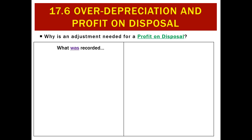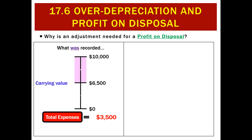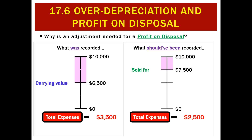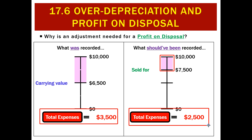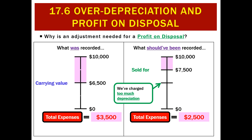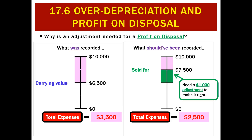Why did we need an adjustment to record this profit on disposal? We started off with a $10,000 computer and depreciated it down to $6,500, giving total depreciation expenses of $3,500 — that was our estimate. What should have happened is we only should have depreciated $2,500. We depreciated it too much — really we should have only depreciated it from here to here. So we've got actual expenses charged of $3,500 when we should have only charged $2,500. To fix that, we need to bump it back up with a $1,000 adjustment, which we call a profit on disposal, which is a revenue.